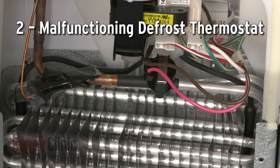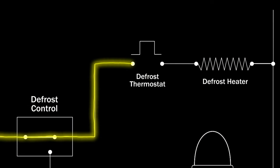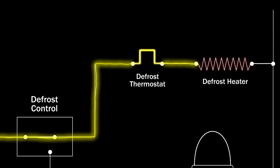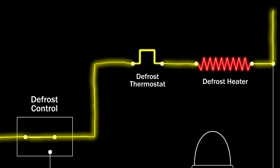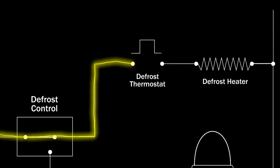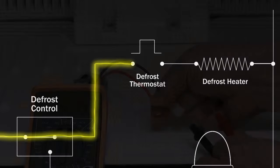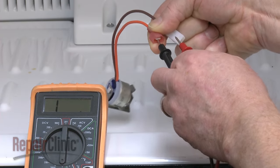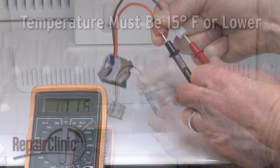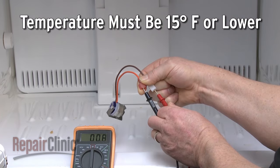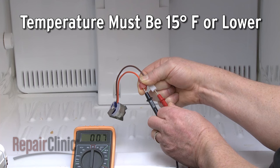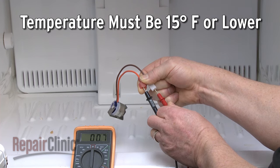The defrost thermostat monitors the temperature of the evaporator coils. When the temperature drops to a set level, the contacts in the thermostat close and allow voltage to power the defrost heater. A malfunctioning thermostat may prevent the heater from working. As with the heater assembly, you can use a multimeter to test the thermostat for continuity to determine if the part is defective. Keep in mind, you'll need to test the thermostat at a temperature of 15 degrees Fahrenheit or lower for a proper reading.